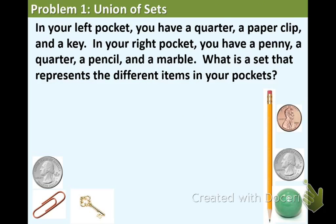Example 1. In your left pocket, you have a quarter, a paper clip, and a key. In your right pocket, you have a penny, a quarter, a pencil, and a marble. What is the set that represents the different items in your pockets?